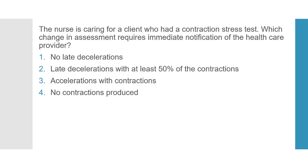Number 3, accelerations with contractions — this is not correct. Accelerations are short-term rises in the heart rate of at least 15 beats per minute lasting at least 15 seconds. Accelerations are normal and indicate the fetus has adequate oxygen supply. Number 4, no contractions produced — this is not a valid contraction stress test result because no contractions were produced. Number 2 is our correct answer and is the only answer that would require immediate notification of the healthcare provider.